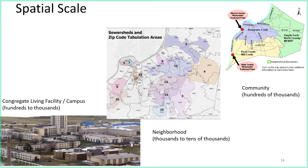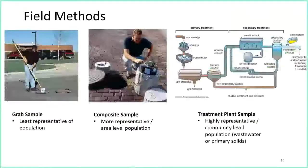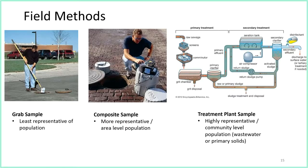The limitation at that scale is the health question you can answer. Working at a wastewater treatment plant, we can answer whether omicron is in Boston — but we can't answer where in Boston omicron is. These scalar issues relate directly to interventions and treatment. For sampling, you can dip a bucket in and get something not very representative, or use our method of grabbing samples every 15 minutes over 24 hours to get a snapshot of the whole community. Colleagues at Stanford go to the treatment plant to get what they call primary sludge — a soil-textured material — to find pathogens.